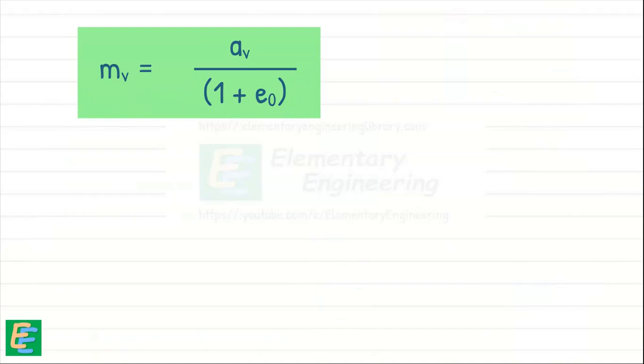Since void ratio is a unitless quantity, the unit of MV is the same as that of AV, which is meter square per kilonewton.